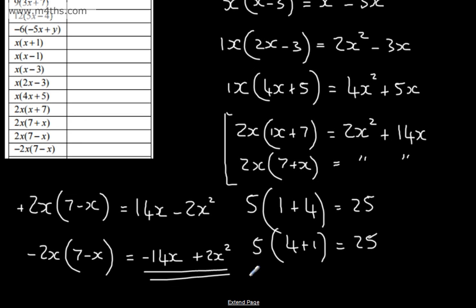So there we go — that's a basic introduction to expanding single brackets. We multiply everything on the outside by the inside, and just consider the correct signs. If the signs are the same, the answer is positive; if the signs are different, the answer is negative.